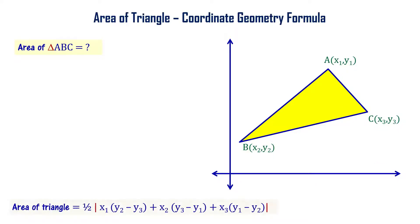Half times modulus of: for example, area of triangle equal to half times modulus of x₁ times (y₂ minus y₃) plus x₂ times (y₃ minus y₁) plus x₃ times (y₁ minus y₂). This is the formula.